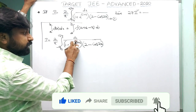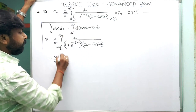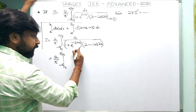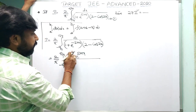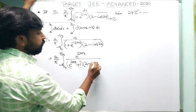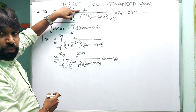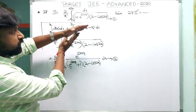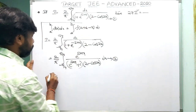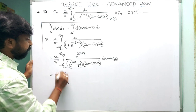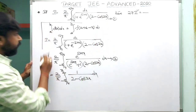In equation 2, e^(−sinx) = 1/e^sinx. Taking the LCM, the numerator becomes e^sinx and the denominator becomes (e^sinx + 1)(2 − cos2x). This is equation 2. Adding equations 1 and 2: numerator becomes (1 + e^sinx), which cancels with the denominator (1 + e^sinx), giving 2I = (2/π) × integral from −π/4 to π/4 of 1/(2 − cos2x) dx.